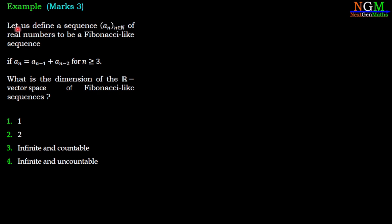Let us define a sequence (aₙ)ₙ∈ℕ of real numbers to be a Fibonacci-like sequence. That means aₙ = aₙ₋₁ + aₙ₋₂ for n ≥ 3. What is the dimension of the real vector space of Fibonacci-like sequences?